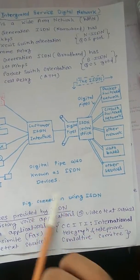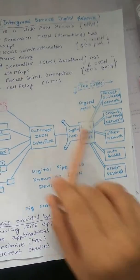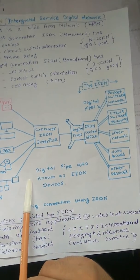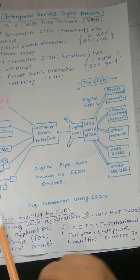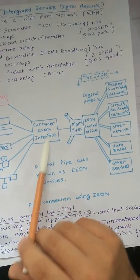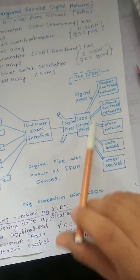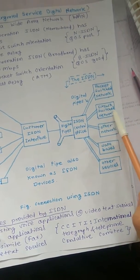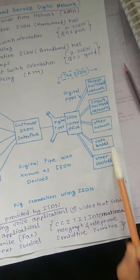Now, the digital pipeline, also known as ISDN devices. Connection using ISDN works like this: phone lines connect to customer ISDN interface, then digital pipes to ISDN center office, then it connects to packet switching networks, circuit switching networks, other networks, and data buses.